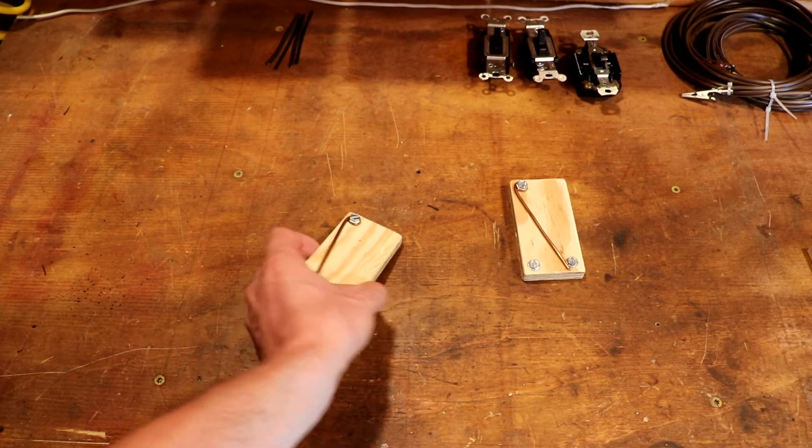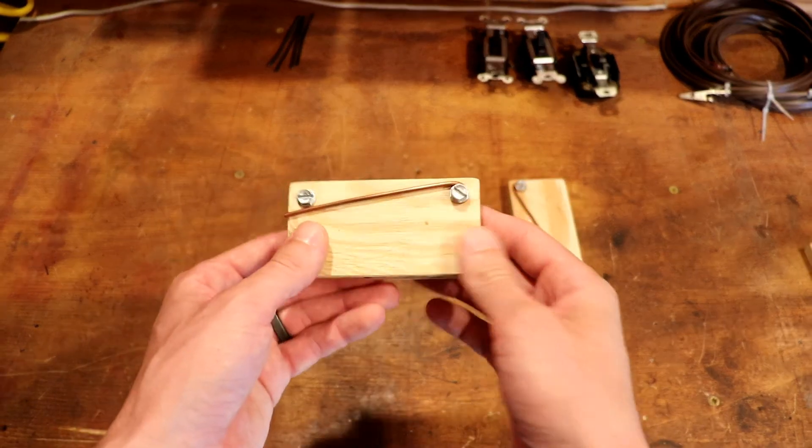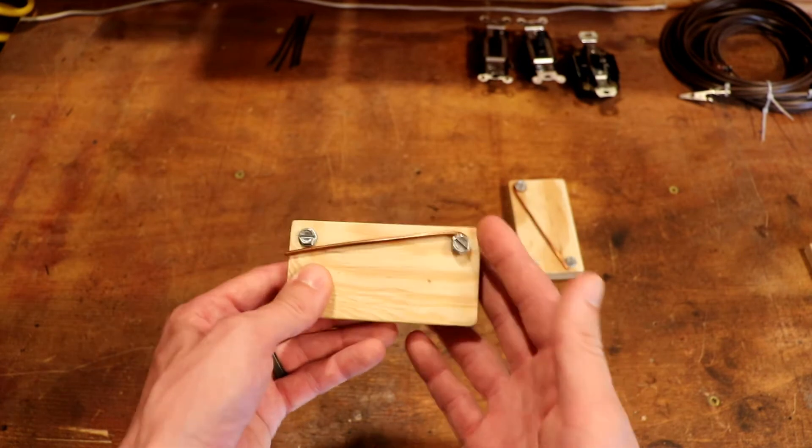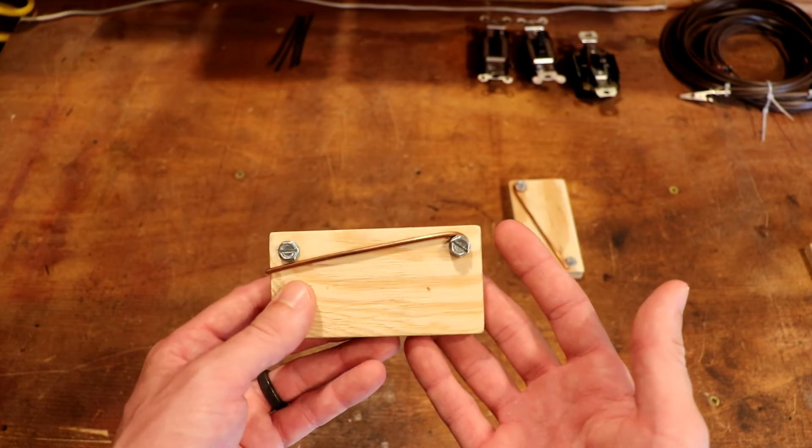Let's start by understanding what happens inside of a light switch. Here I have some blocks made up just to give you an accurate representation of what the circuitry looks like inside of a switch.